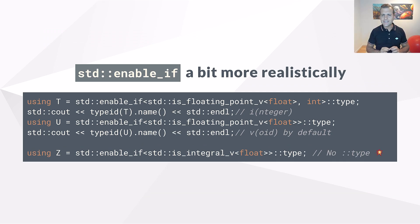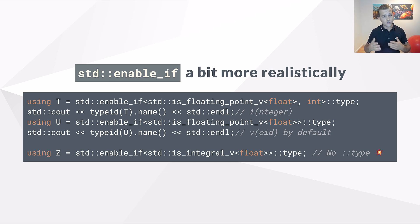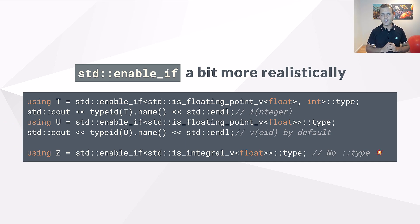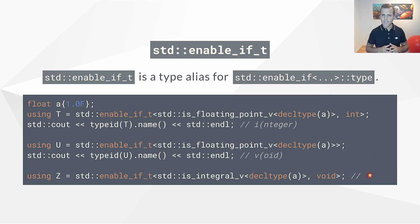Let's take a look at some more realistic examples with enable_if. The type float is a floating point number, so the first template parameter is true — as a result, enable_if has a public member type definition called type of type int. If we don't specify the second template parameter, it defaults to void. What happens if the first template parameter is false? Then there is no type definition — the last line will not compile. A float is not an integral number, so the first template parameter is false; trying to access the type member type definition will fail during compilation. To save you some typing, there is a helper called enable_if_t (enable_if_type) — use it to skip writing ::type after enable_if. Pause the video to have a look at the code.